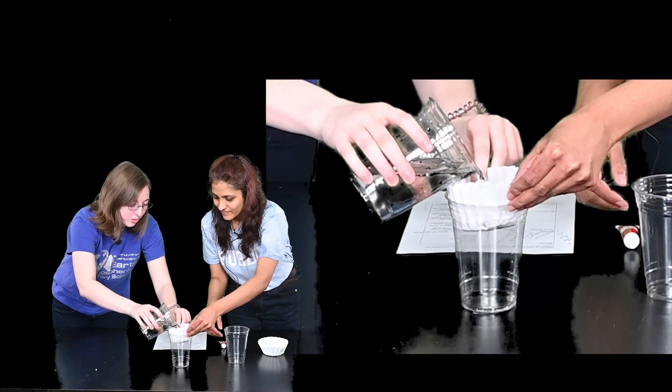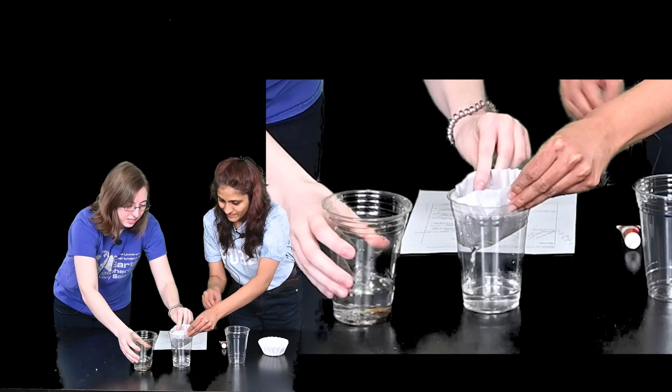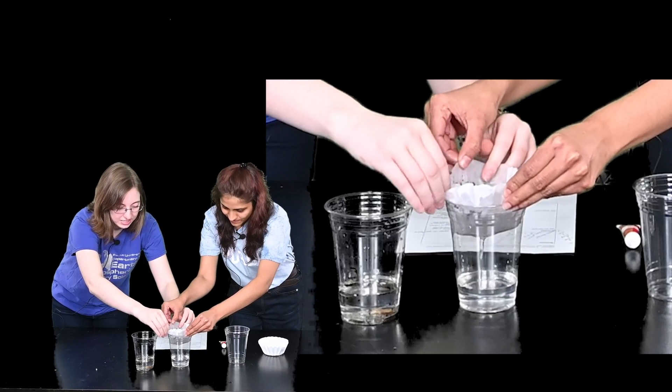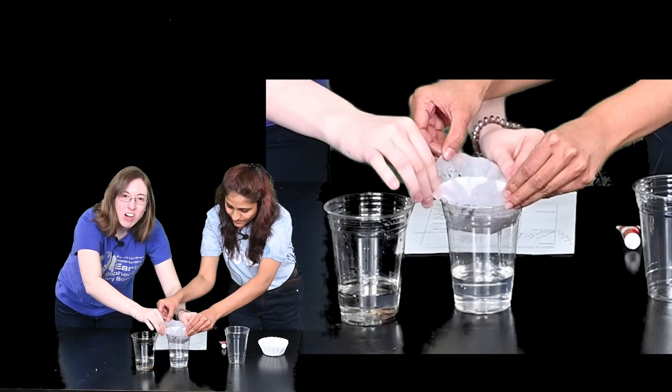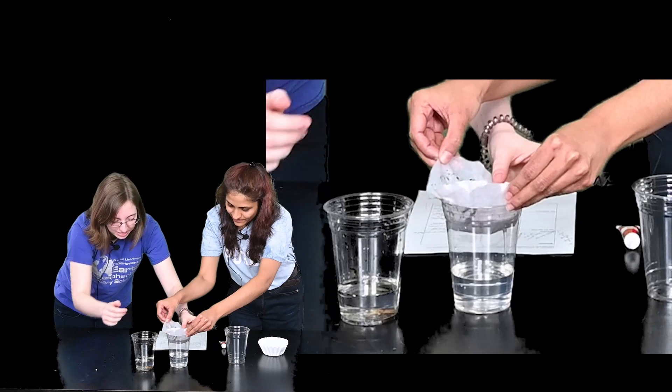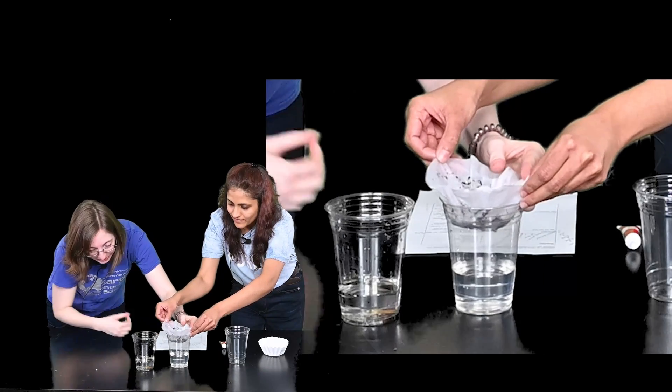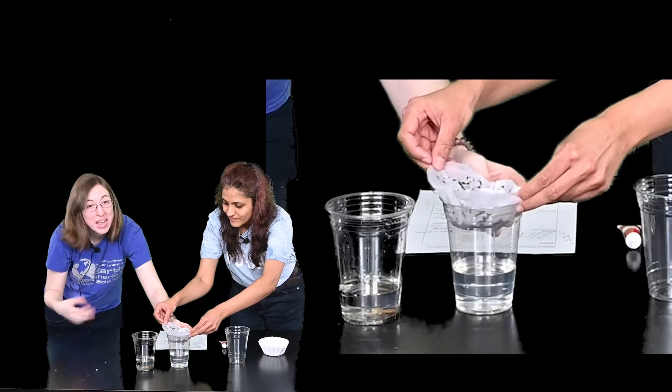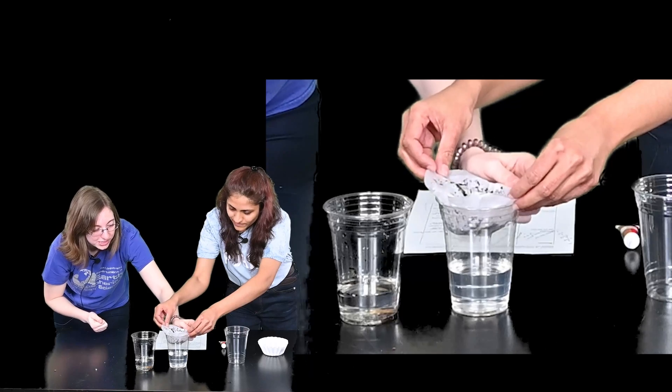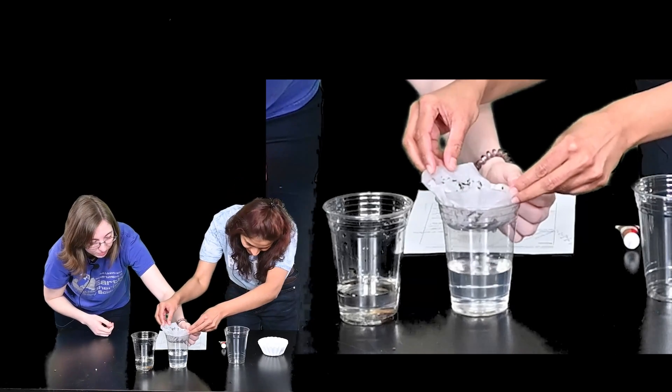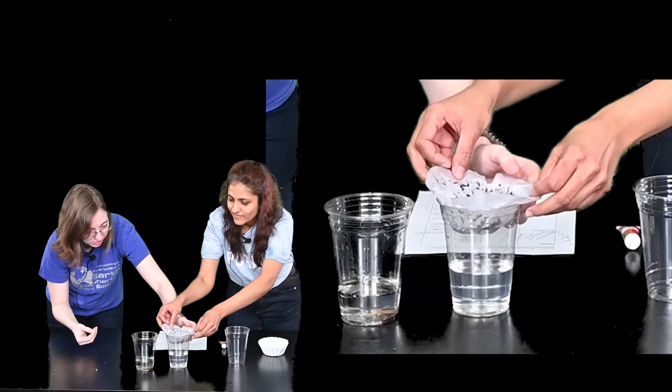So we're just going to pour our polluted water right through there. And so if you can see our filter is catching all of that big yucky stuff that we have that we added to our water and what's making it through is all the nice fresh water. So it's clear you can see that we've taken out all of those big particles, all of that dirt and gross that we had added to it. So that worked really well for our big particles that we were using.